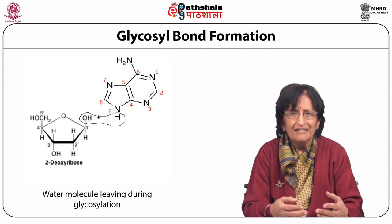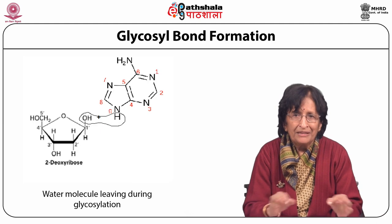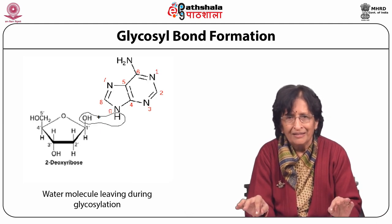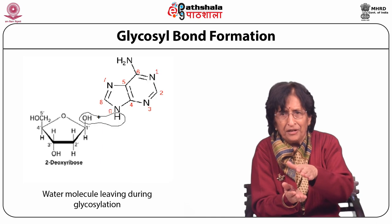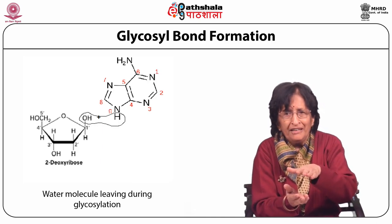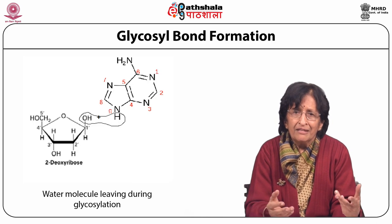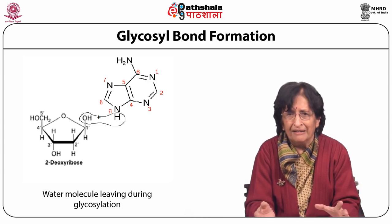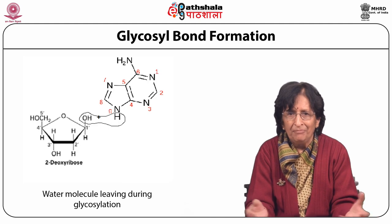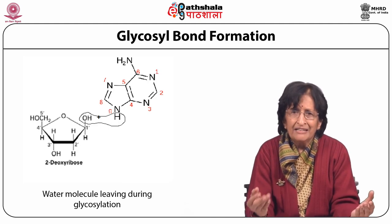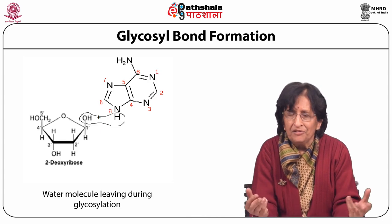The bases have alternate double bonds, so they are aromatic in nature, and this leads to the planarity of their structure. They can stack over each other and are held together by a conjugated pi electron system, sometimes also called pi electron current. The structure of RNA can also be helical or more complex with some helical regions in between, where bases stack over each other in helical regions but not in non-helical regions.